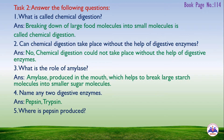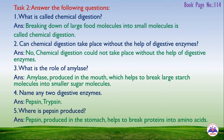Fifth question: where is pepsin produced? Answer: pepsin is produced in the stomach and helps to break proteins into amino acids.